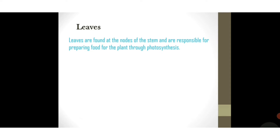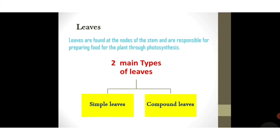Leaves are found at the node of the stem and are responsible for preparing food for the plant through photosynthesis. There are two main types of leaves: first is simple leaf, and the second one is compound leaves. So let's see what simple leaves are.